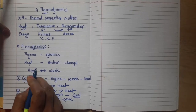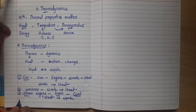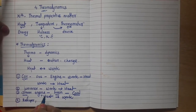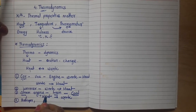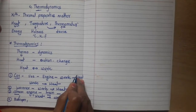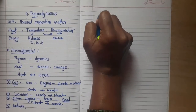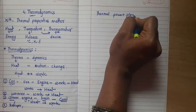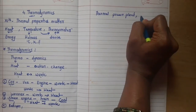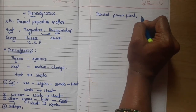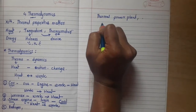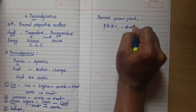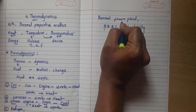We can take examples from our daily life, like a Refrigerator, Air Cooler, and Electricity. Electricity is produced from many sources like Thermal Power Plant, Hydroelectric Power Plant, Solar Energy, Wind Energy, and many more types. Out of that, nearly 55.5% of electricity is obtained from Thermal Electric Power Plants.